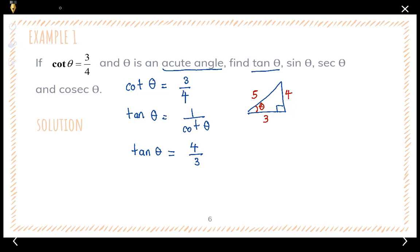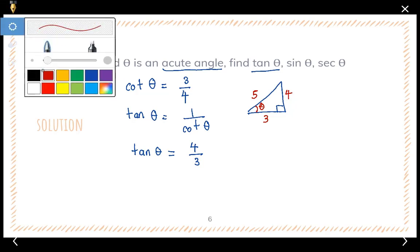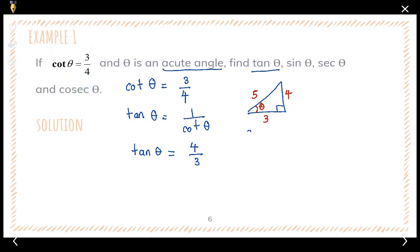Now we are going to find the answers. Starting with sine theta: sine equals opposite over hypotenuse. The opposite of theta is four and the hypotenuse is five, so sine theta equals four over five.